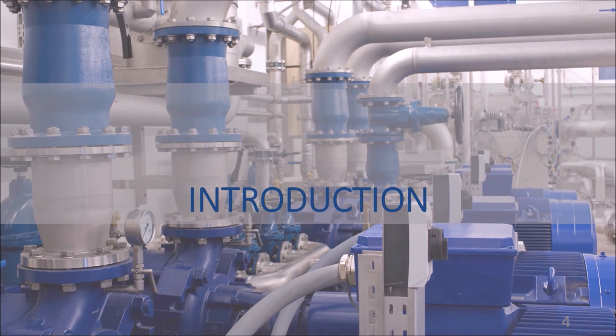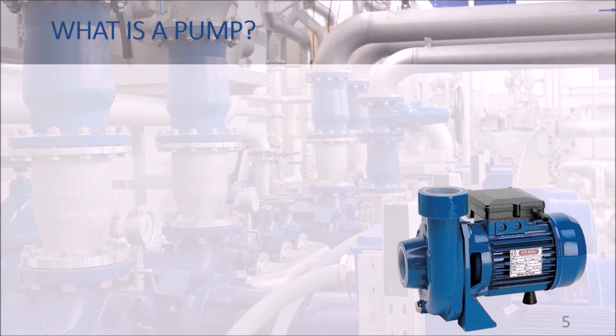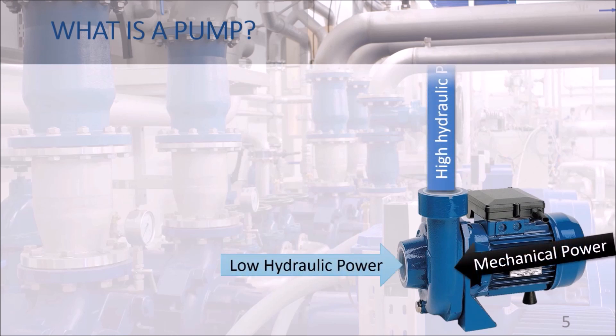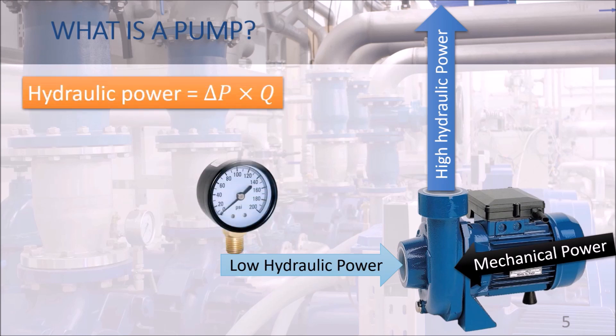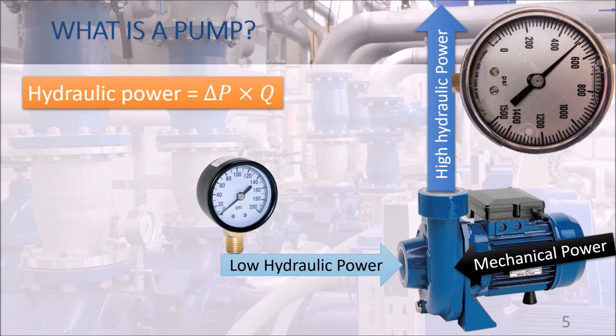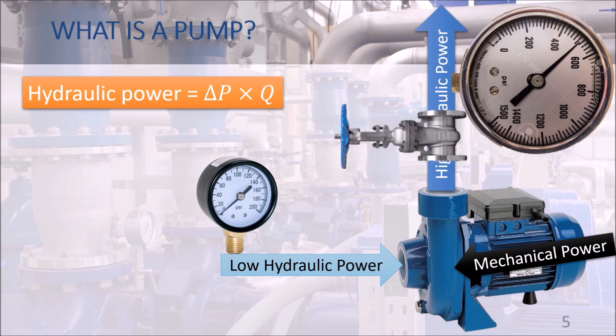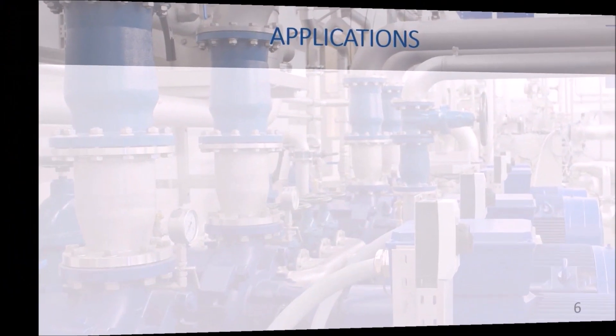Let's start with an introduction about the pump. We will define the machine, give some applications, and introduce the two main types of pumps. A pump is equipment that converts mechanical power supplied by a prime mover — typically an electric AC motor — into hydraulic power in the pumped liquid. By hydraulic power we mean the product of pressure difference times flow rate, which allows the liquid to overcome piping system resistances such as friction with the pipe wall, components like valves, or tank level difference.